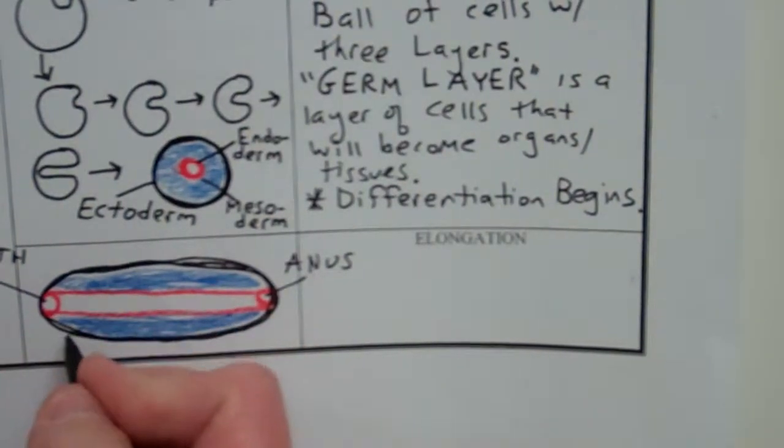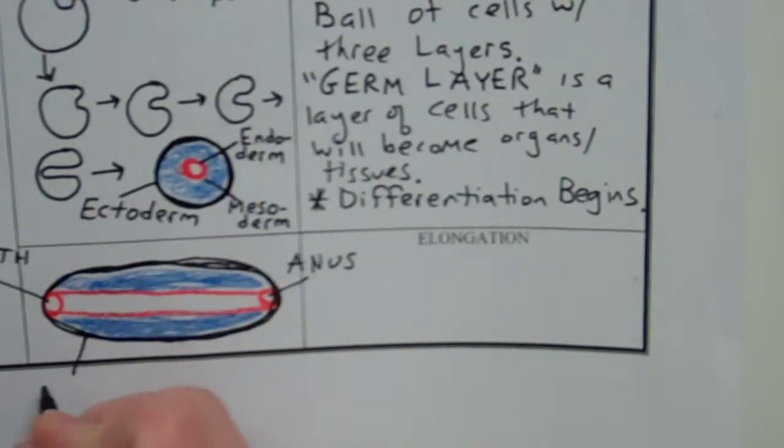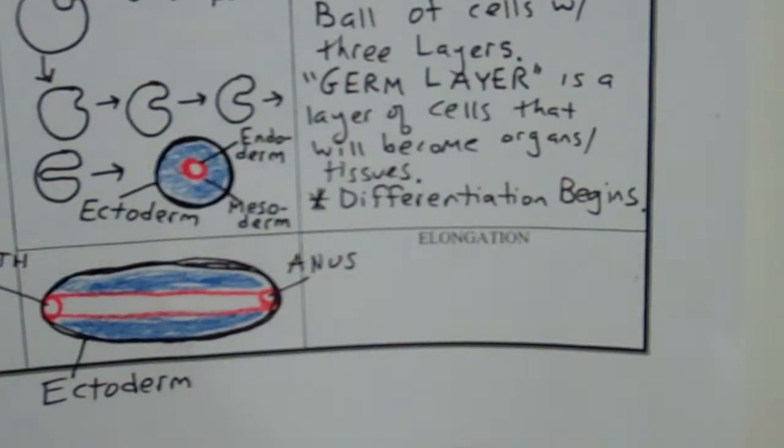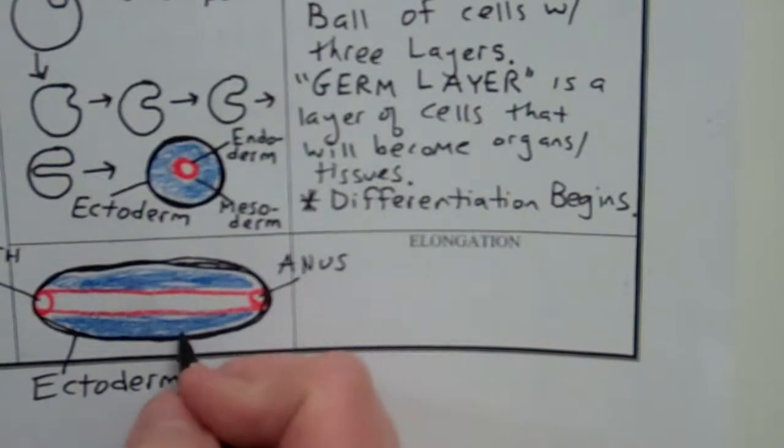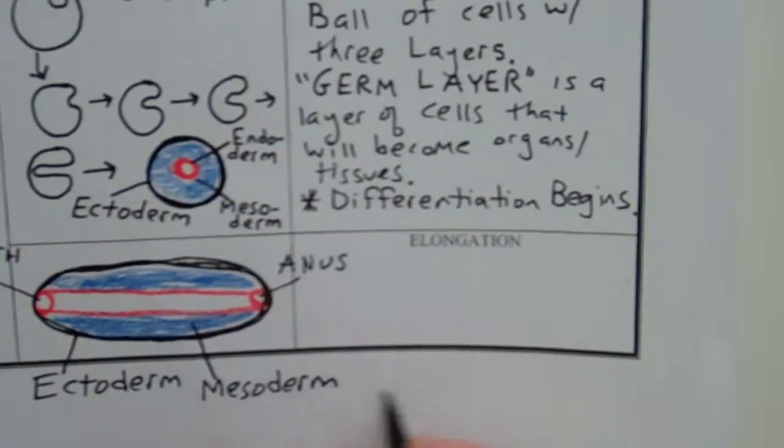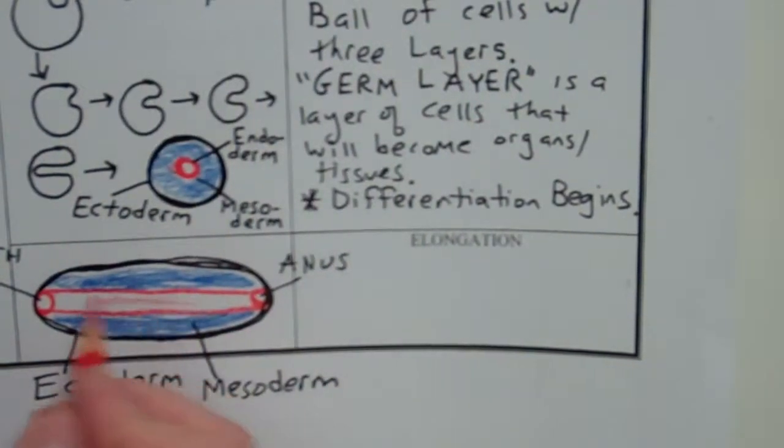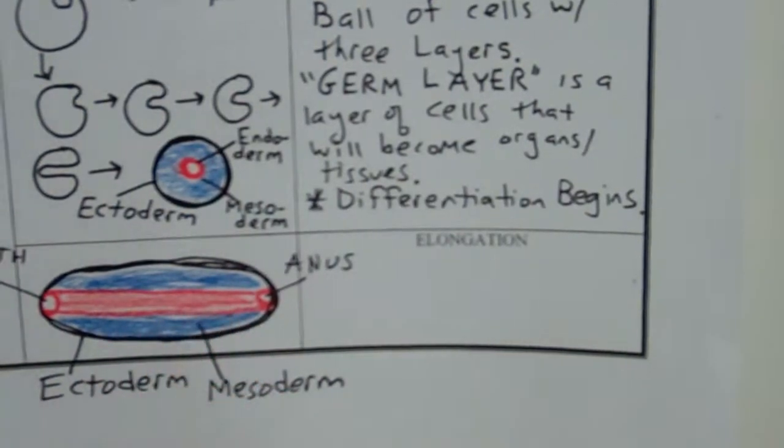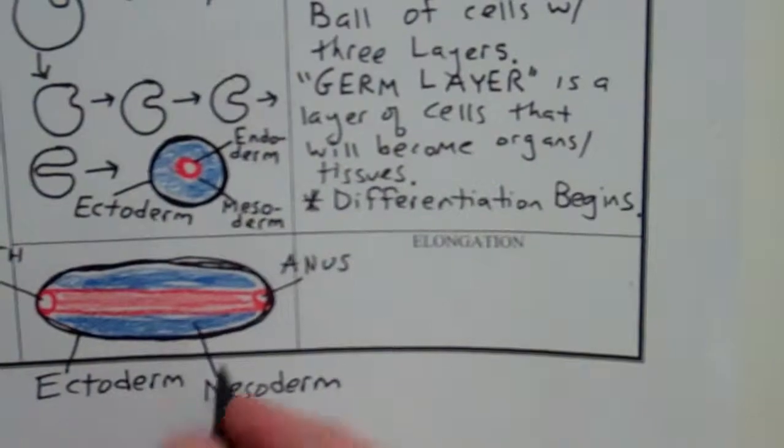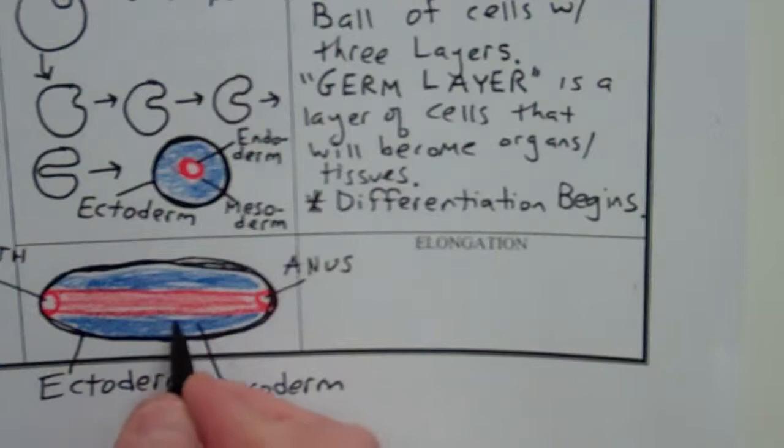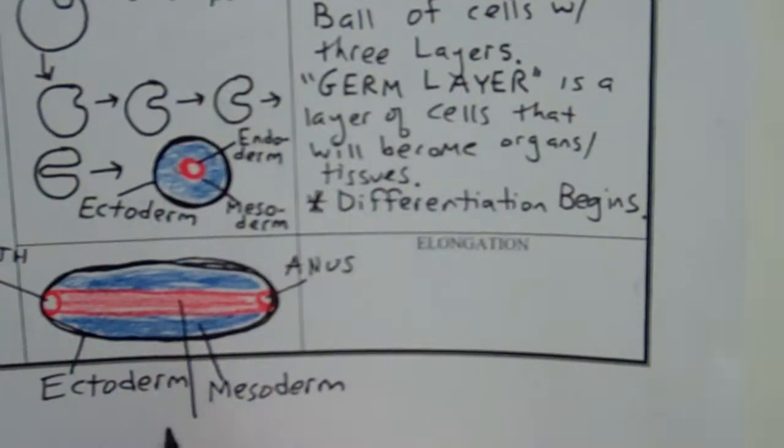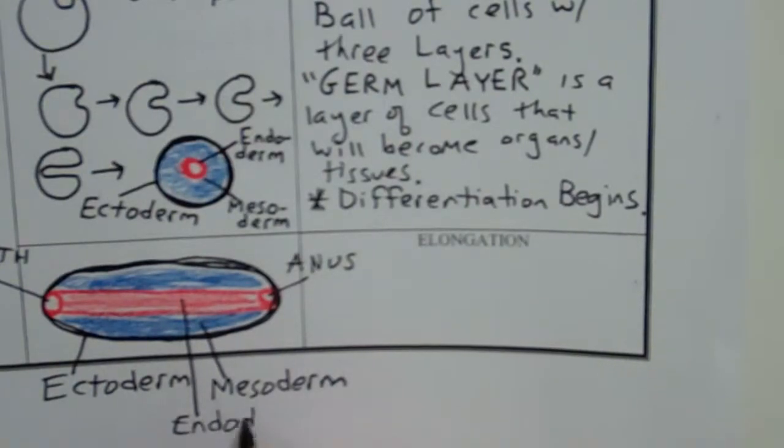So on this we've got black layer, ectoderm, your outer layer. Think about what you think that's going to become in this developing embryo. It doesn't look like an embryo, but it is. This is your middle or mesoderm, and this red, I might as well color it, my color scheme. So this red layer is my endoderm. Think about what you think that's going to become. If this is the mouth and anus, think about what system in your body that's going to become. So that's your endoderm.